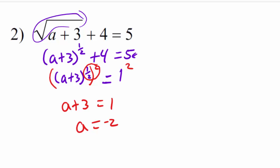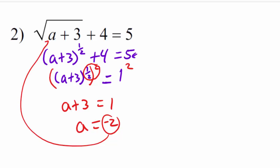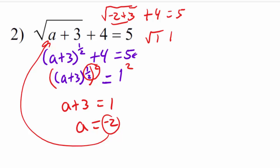So the solution appears to be negative 2. We substitute negative 2 back in: square root of (negative 2 plus 3) plus 4 equals 5. Negative 2 plus 3 is 1, so we have square root of 1 plus 4 equals 5. The principal root of 1 is 1, so 1 plus 4 equals 5. Five equals 5 — that checks out. So negative 2 is our solution.